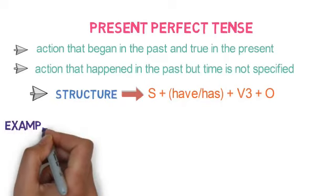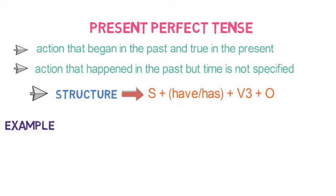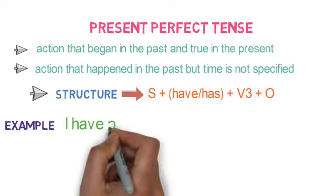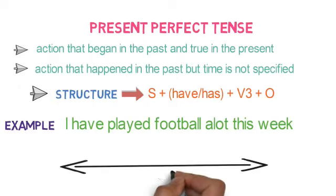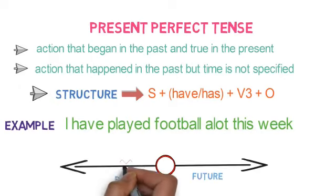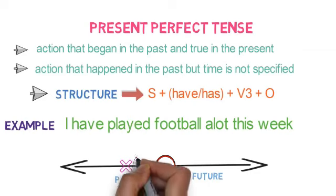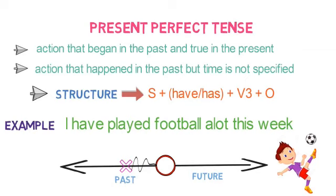Let's look into an example of action that happened in the past and is still true: I have played football a lot this week. Let's look into the timeline for it. The action of playing has started in the past and is still true in the present moment. That is, I am still playing football.